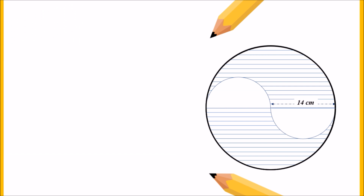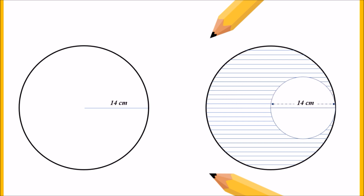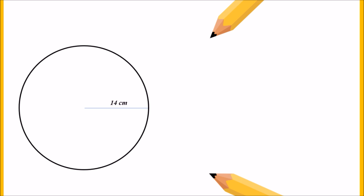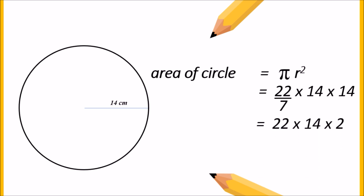Let us separate the two circles. The big circle has a radius of 14 centimeter and the small circle has a diameter of 14 centimeter. For the big circle, area equals pi r squared. Taking pi as 22/7 and radius as 14: we divide 14 by 7 to get 2, so the calculation is 22 into 14 into 2, giving the answer 616 centimeter square.